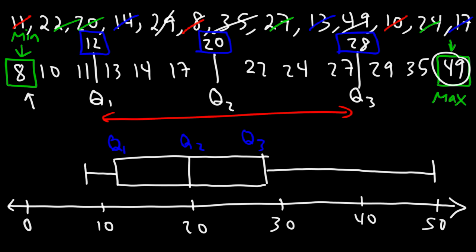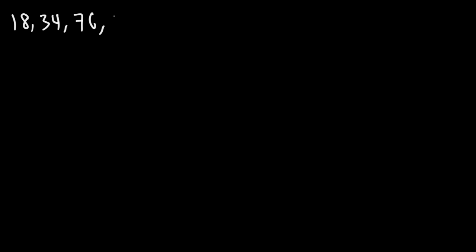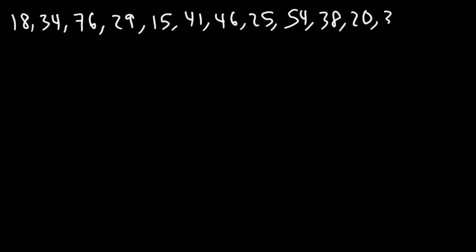Now what about if we had an outlier? How would that impact the box and whisker plot? Let's consider an example where that's the case. Let's write out a list of numbers: 18, 34, 76, 29, 15, 41, 46, 25, 54, 38, 20, 32, 43, and 22. If you think you know what to do, feel free to pause the video and try it.